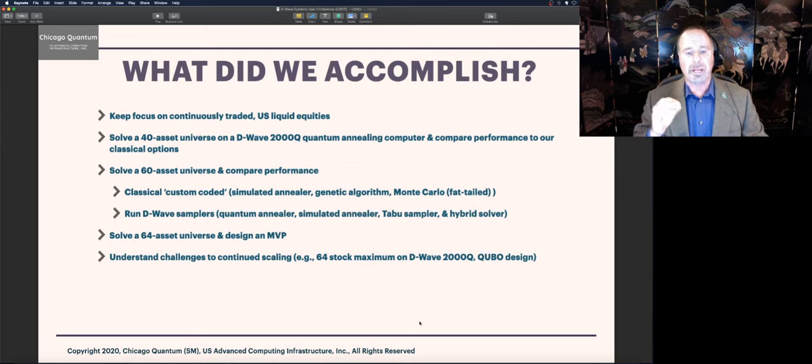We also ran against not only the quantum annealer, but the D-wave simulated annealer, the taboo sampler, and the hybrid sampler. Now we have the D-wave competing much more aggressively with the best that we can run on our company's in-home computers. We also recently solved a 64 asset universe, so we've designed a minimum viable product to go to market with. And we now much better understand the challenges to scaling up to more assets.